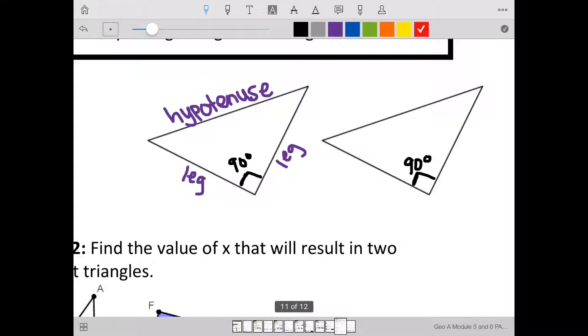For the HL Theorem, we need the hypotenuse of one right triangle to match the hypotenuse of the other right triangle, and one leg to match another leg. Again, really important, we always check for the right angle before we use the HL Triangle Congruence Theorem.